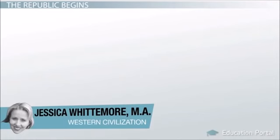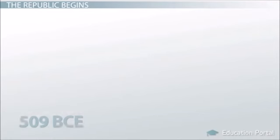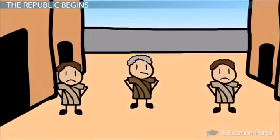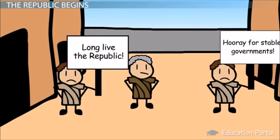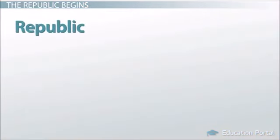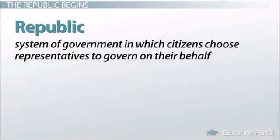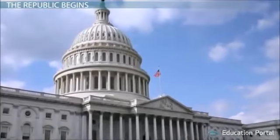When the Romans overthrew their Etruscan rulers in the year 509 BCE, they weren't just changing their political status. They were establishing a form of government that would influence politics for thousands of years to come. Upon freeing themselves from the conquering Etruscans of the North, the Romans formed a republic — a system of government in which citizens choose representatives to govern on their behalf. With this, they established a governmental system which was a precursor to many in our modern-day world.